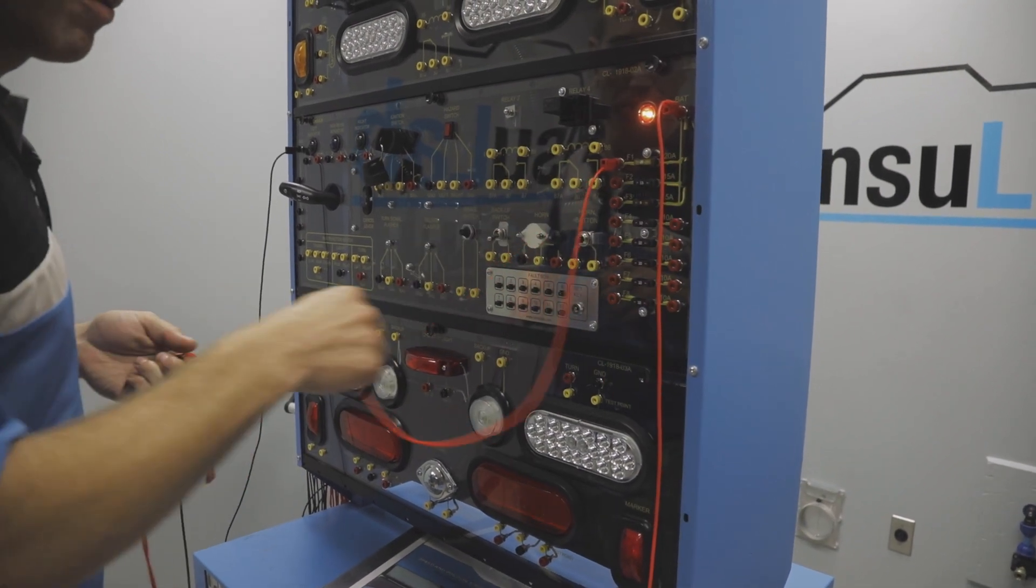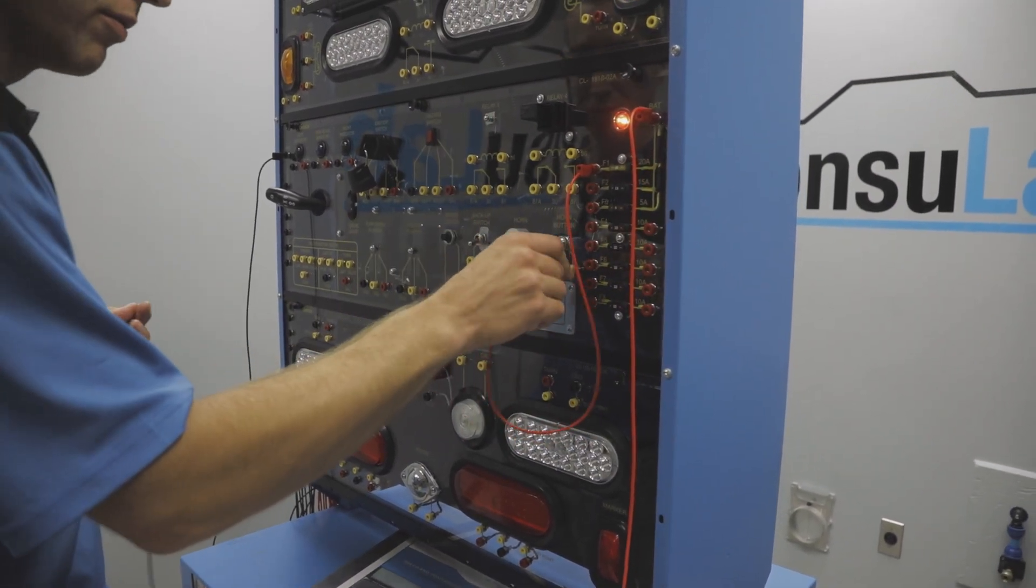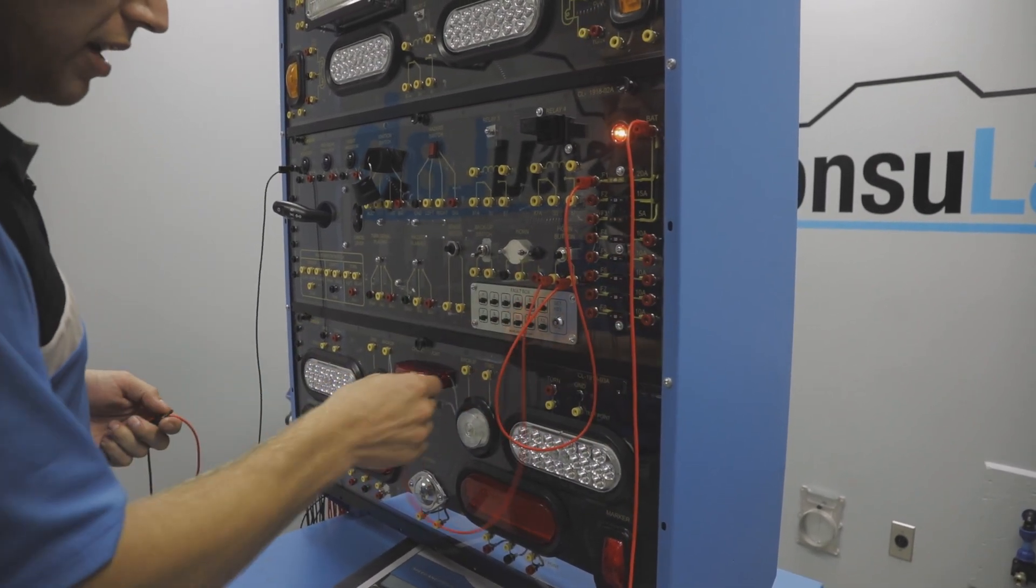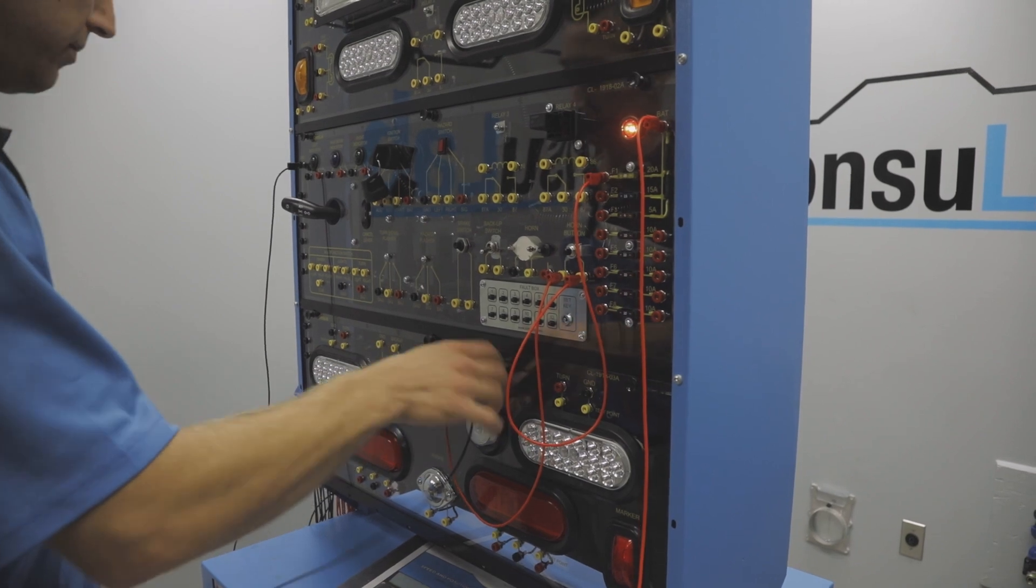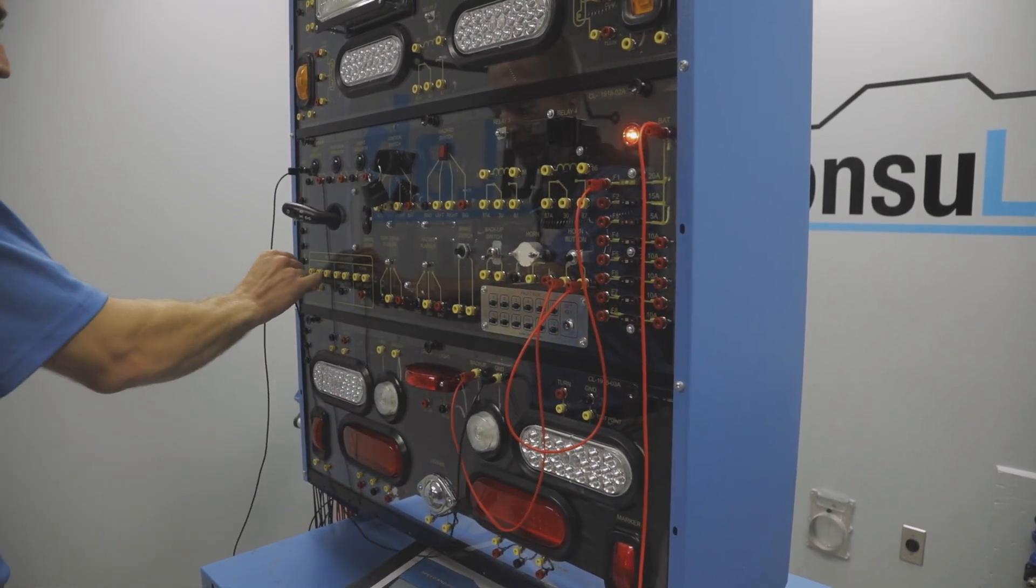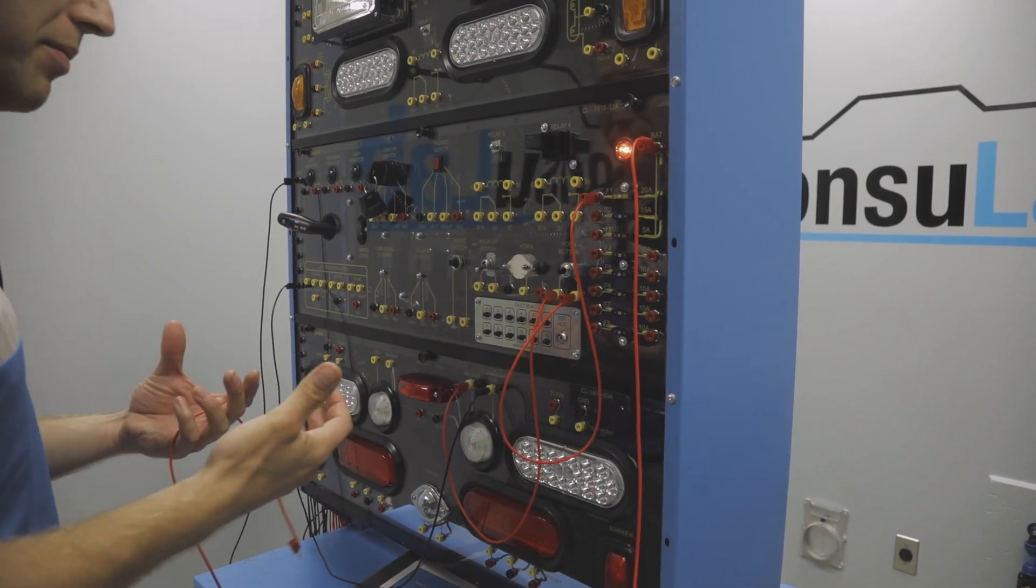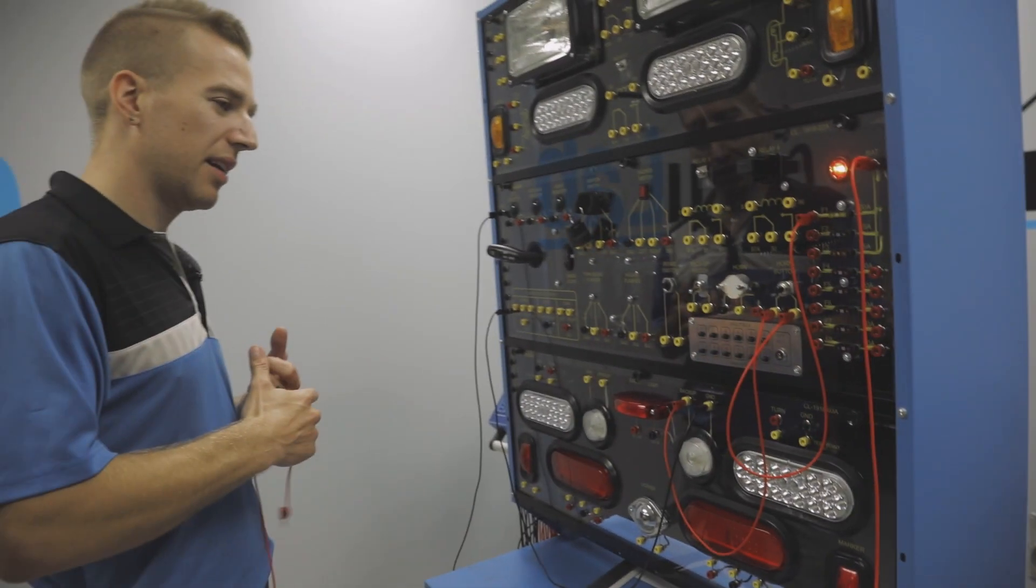We can do something simple with one switch and one light bulb. We'll go through a fuse, pick a switch, we'll use the horn switch. We're going to go from the horn switch to a light bulb. We're going to go from the light bulb to ground, and theoretically we haven't made any mistakes, it should work.